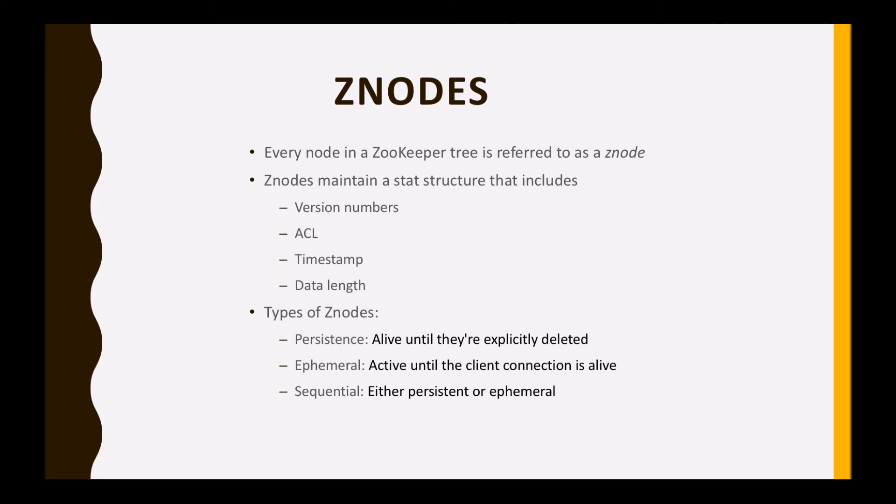The last one is sequential nodes. These nodes can be either persistence or ephemeral — meaning they can be permanent or temporary. When a new Z node is created as a sequential Z node, ZooKeeper sets the path by attaching a 10-digit unique sequence number to its original name. Sequential Z nodes play an important role in locking and synchronization.